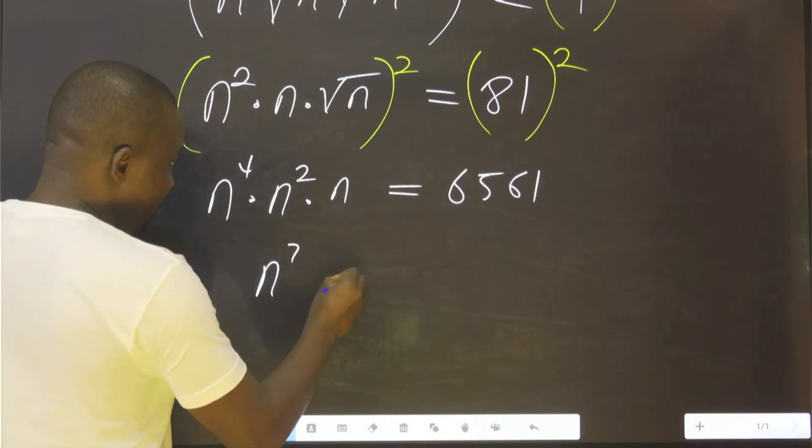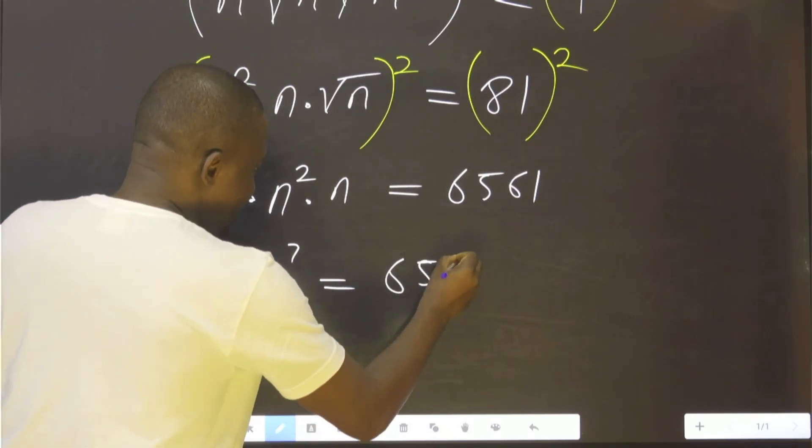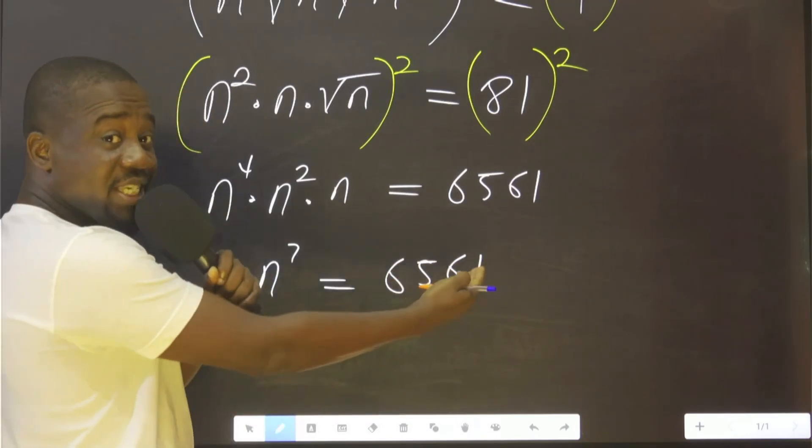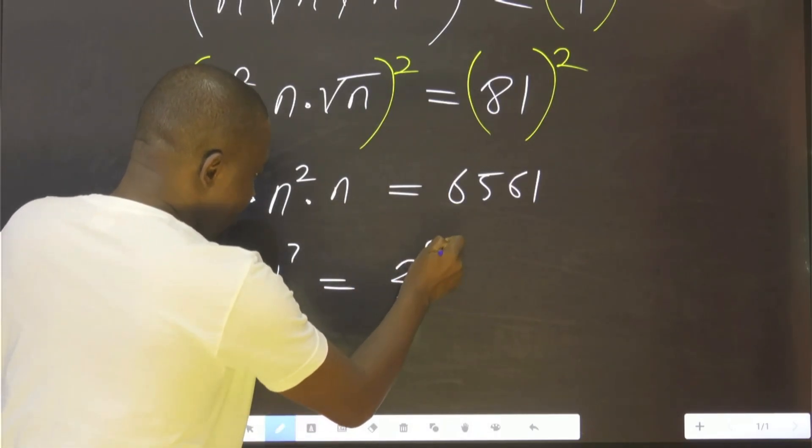That is n raised to the power 7, which equals to 6561. So what is the meaning of this? It simply means 3 raised to the power 8.